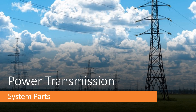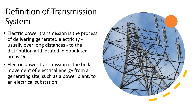Today, I will be discussing power transmission system, its definition as well as parts. So let us start with definition. Electric power transmission is the process of delivering generated electricity, usually over long distances, to the distribution grid located in populated areas.